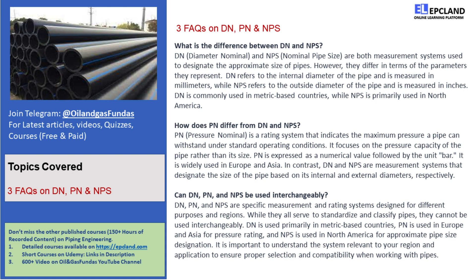Question 1: What is the difference between DN and NPS? Great question! DN, or Diameter Nominal, and NPS, or Nominal Pipe Size, are both systems used to designate pipe sizes. However, they differ in terms of what they represent. DN refers to the internal diameter of the pipe and is measured in millimeters.